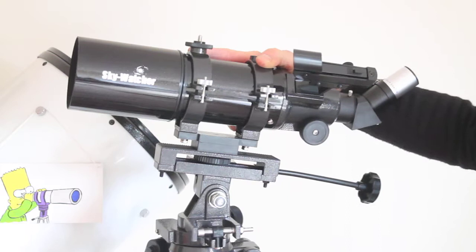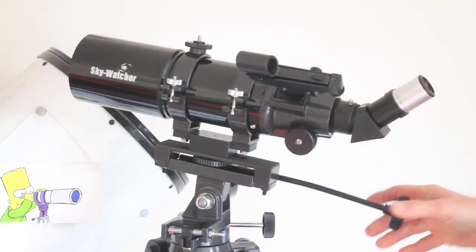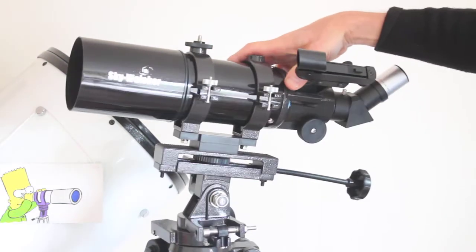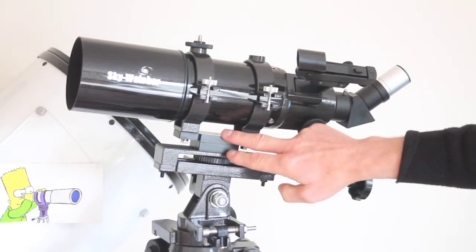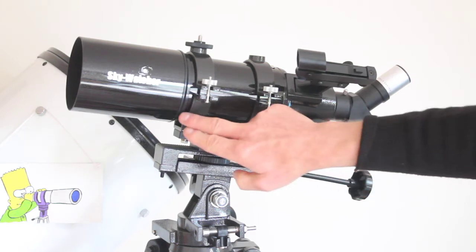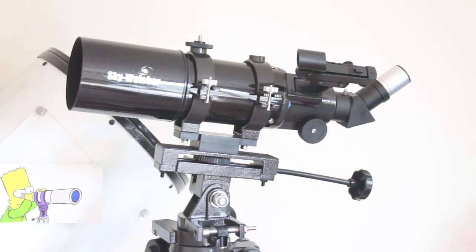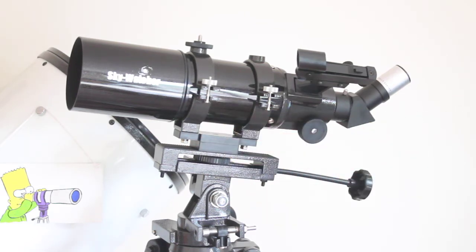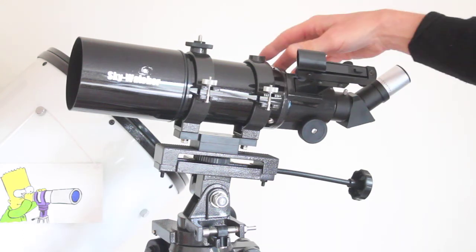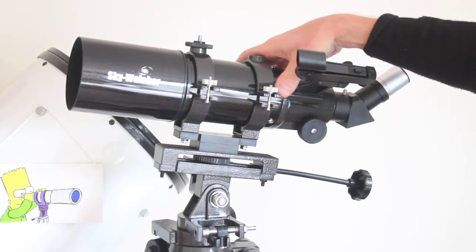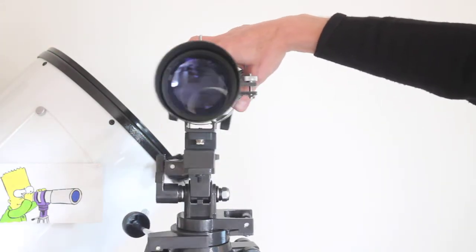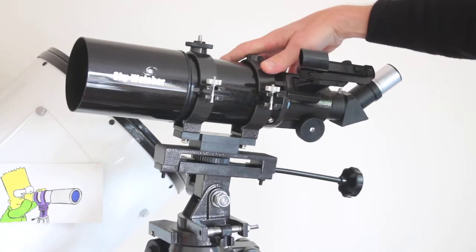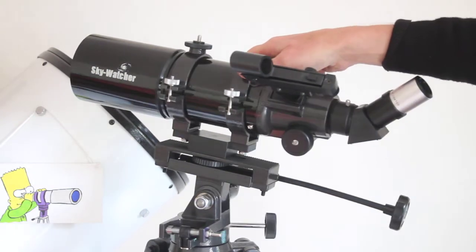There are slow motion controls, and it actually comes with two rings so you can connect a dovetail bar for connection to an EQ mount. This one has multi-coated optics, 400 millimeter f/5, which makes it handy for photography.